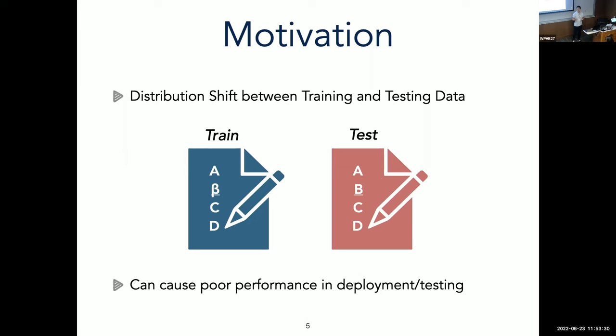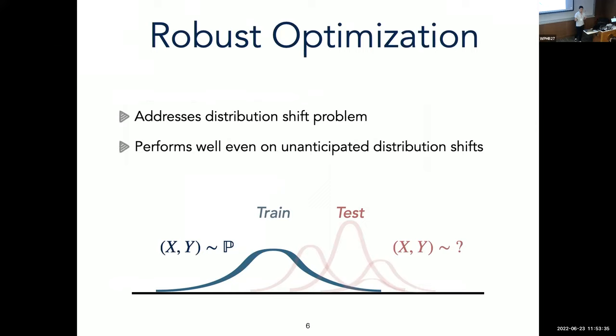So to tackle this distribution shift issue, we propose to use robust optimization, which is a modeling paradigm and a set of computationally efficient methods that will return solutions robust to uncertainty. The nice thing about robust optimization is that it addresses this distribution shift problem without having to know what the actual distribution shift is. And it performs well, even if the distribution of our testing set is different than what we anticipate.